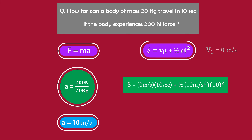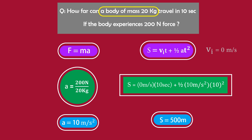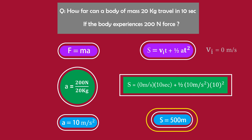Hence I get 500 meter distance. This means that if you exert 200 newton force on a body of mass 20 kg, this force will create 10 meter per second square acceleration and the body will cover 500 meter distance in the direction of the force. I hope you have learned these concepts. Thank you very much for watching this lecture.